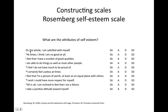Looking at the first two questions: 'on the whole, I am satisfied with myself — strongly agree' and 'at times, I think I'm no good at all — agree.' These don't reconcile each other. It doesn't make any sense why somebody would sometimes not feel good about themselves but also feel like a person of worth. So it's a way of checking the internal validity of a respondent.